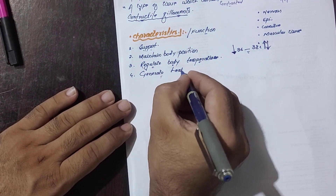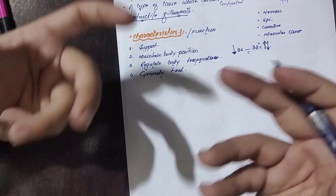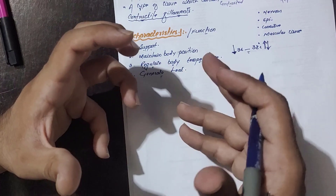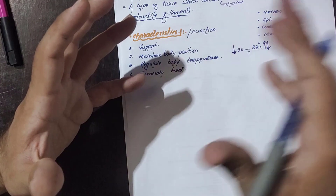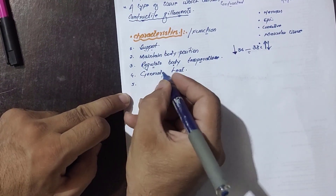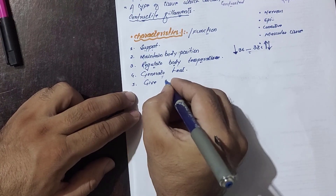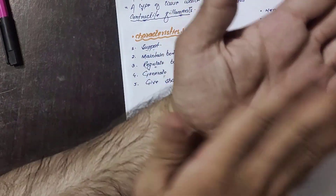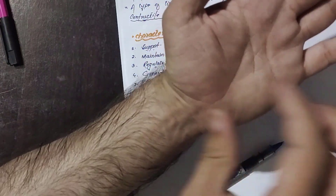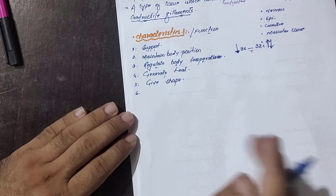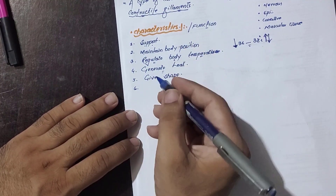Muscles also generate heat. When we are running, our body temperature rises because the muscles are active and metabolic activities inside them increase, causing the release of energy and heat. Additionally, muscles give shape to our body. The thenar region, hypothenar region, and the forearm compartments — all the shape and beauty of our hands and body are due to muscles.